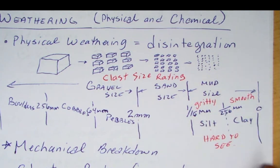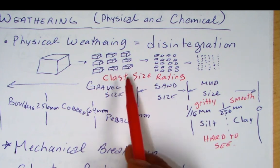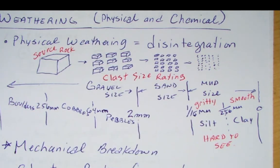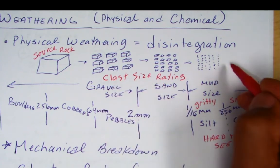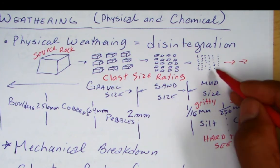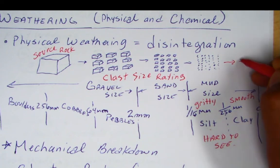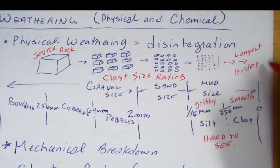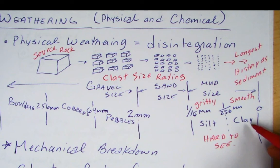We can think of this as the source rock — this is where material is being eroded or weathered from and then transported. The farther you go on this path, that means the longer time it takes to break the rock down into smaller pieces. So when you get to clay size, we're going to call this the longest history as sediment. In order to get to clay size, it's been around a long time, it's had more history, more things have happened to it. It's traveled farthest from its source area.